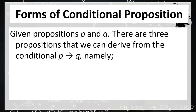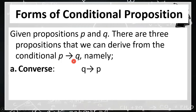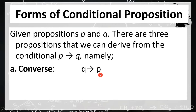So, the first proposition is converse. For a given conditional statement P implies Q, we can write the converse statement by interchanging or swapping the roles of the hypothesis and conclusion of the original conditional statement. Therefore, the converse is the implication Q implies P. Notice that the hypothesis of the conditional statement becomes the conclusion of the converse.